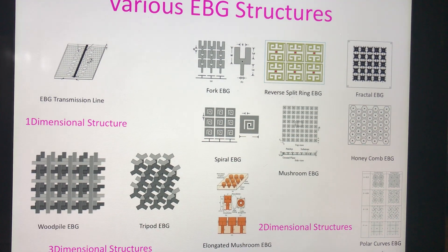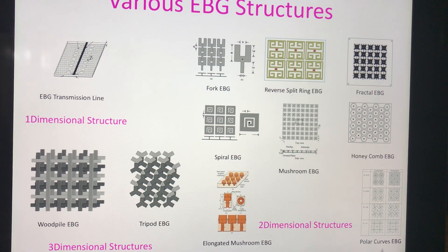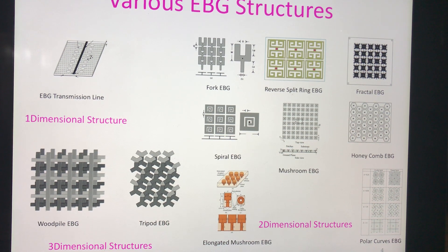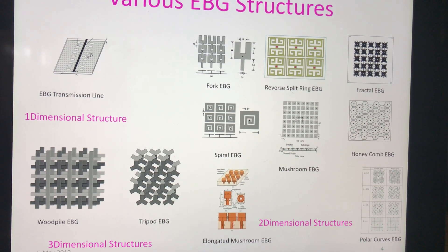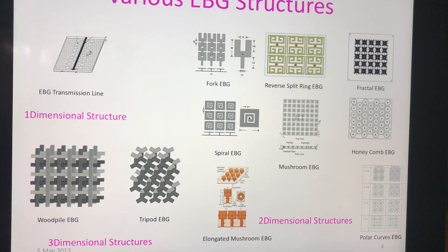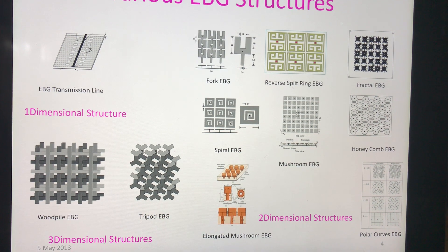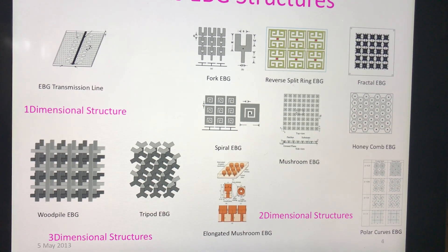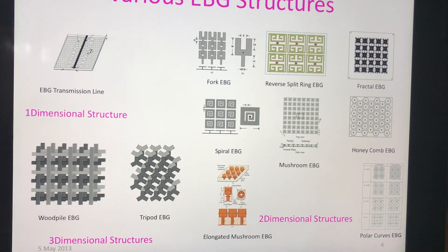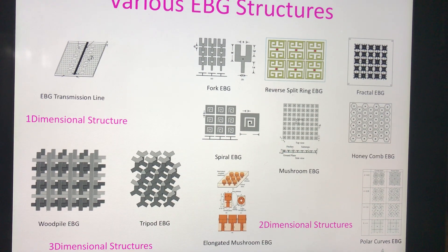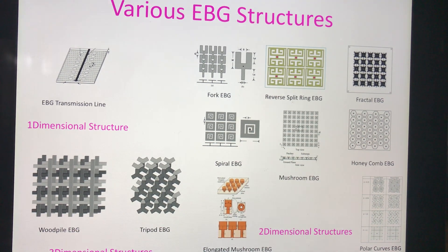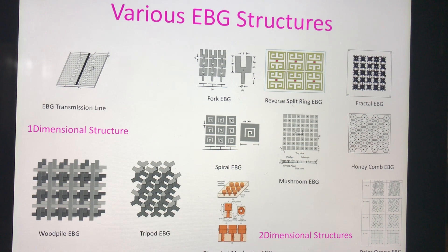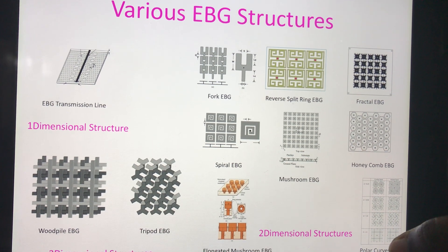Three-dimensional structures include the wood pile EBG or tripod EBG. These are complete EBG structures that can assist or stop frequencies for all polarization angles and all incident angles.